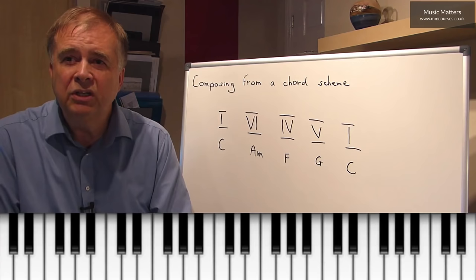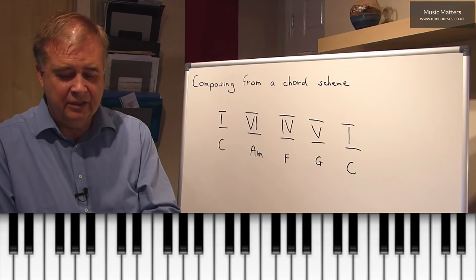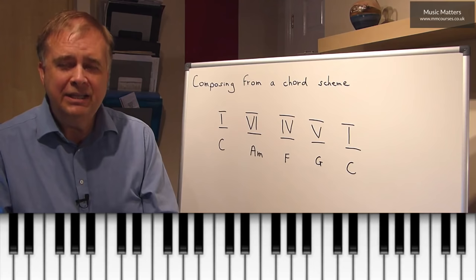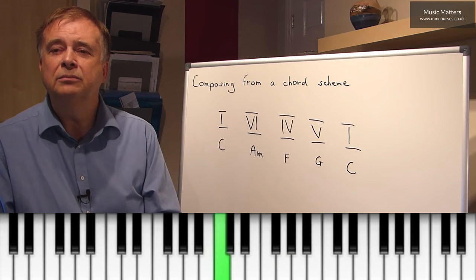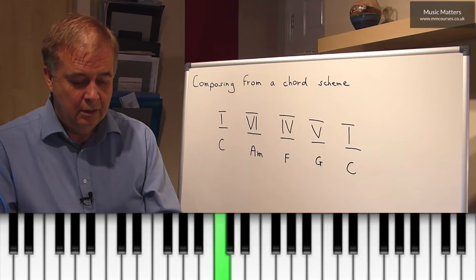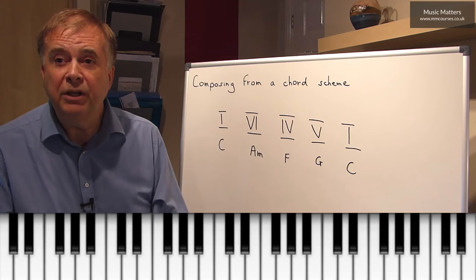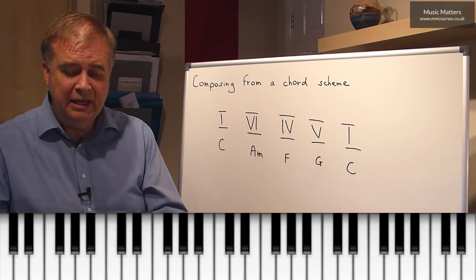You could have a system where you have something called an Alberti bass. Now this was something that was very common in what we call the classical period. So composers like Mozart and Haydn and people did this kind of thing. Where you take your chord, here's your C chord, your chord I, and you break it up like this. So you go bottom, top, middle, top. Bottom, top, middle, top. So they might have done this by going like this. Chord I, six, four, five, one. And that's called an Alberti bass. So you could use something like an Alberti bass, and then maybe come up with a melody that goes over the top of it.